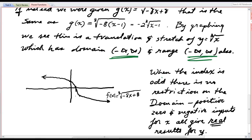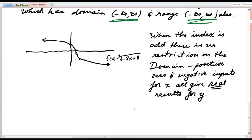So, what do I want to say here? When the index is odd, there are no restrictions on the domain. So, positive, 0, and negative inputs for x all give real results for y.